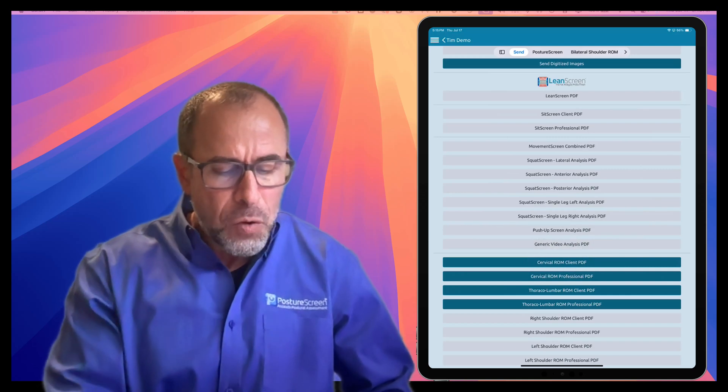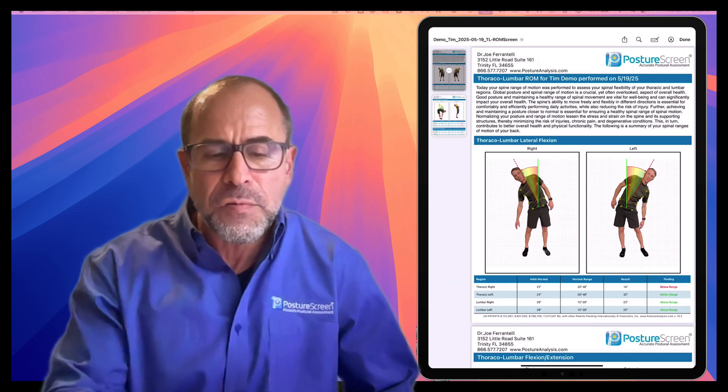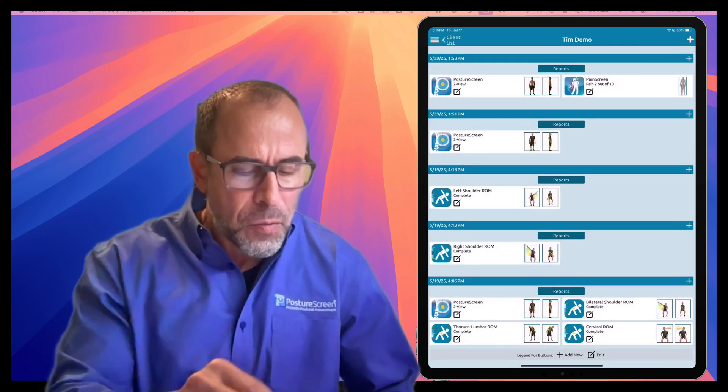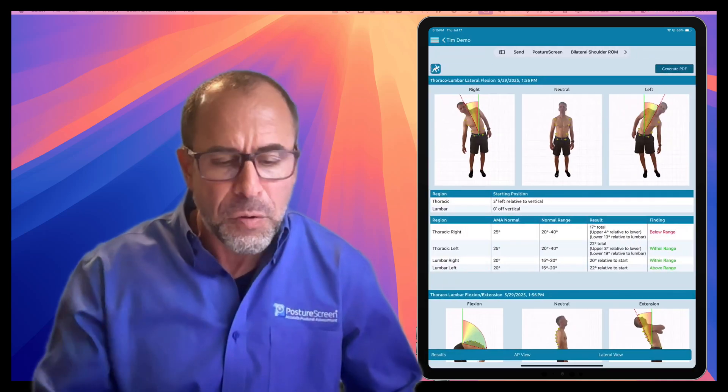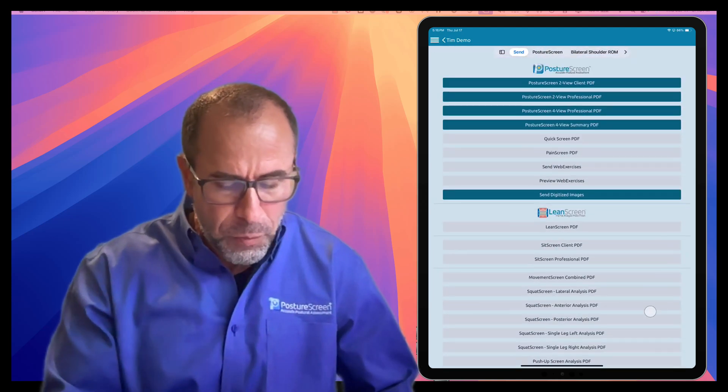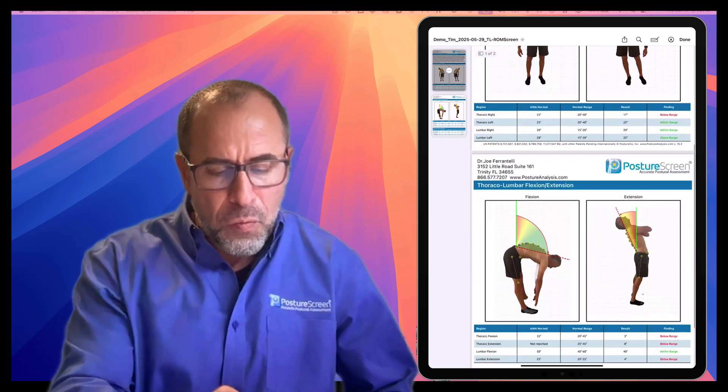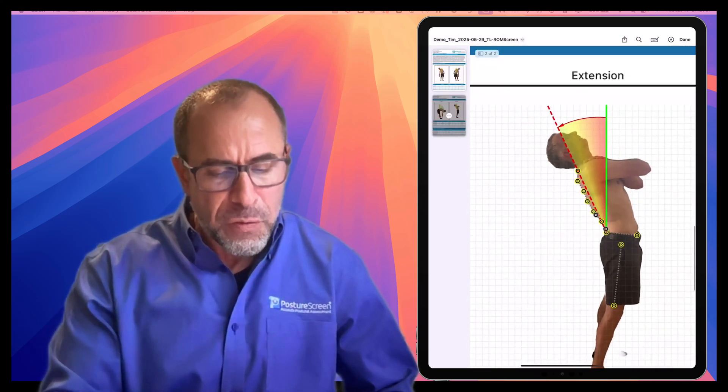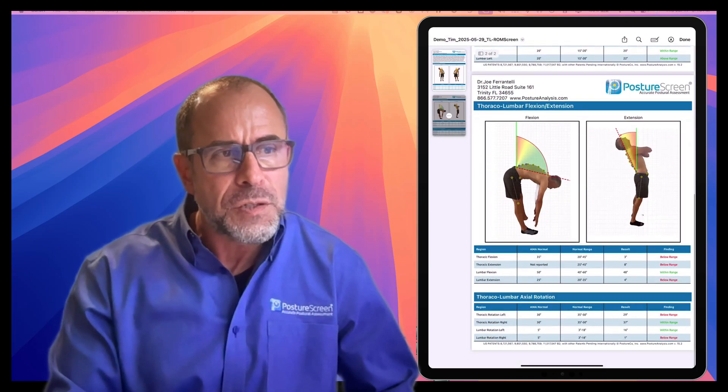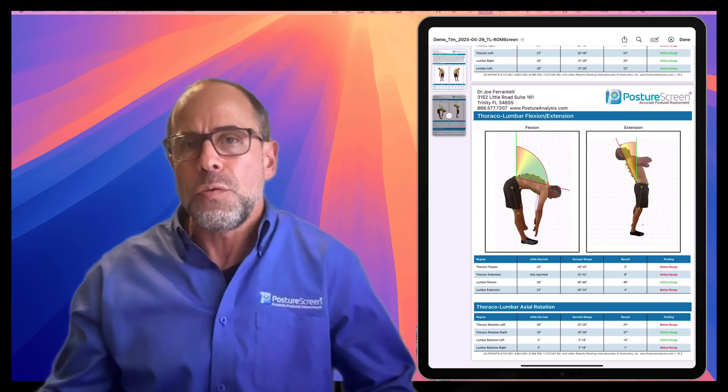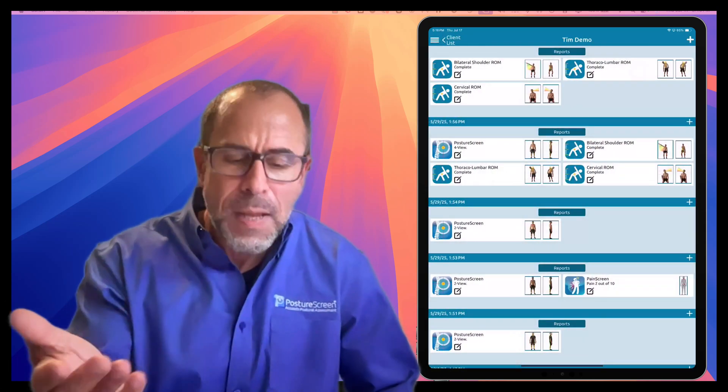Now, what's unique is with the thoracolumbar spine, we're able to track their posture as well. If I generate a report for thoracolumbar spine for the patient, notice what we're able to do is we're literally tracking the curvature of their back from start position to flexion and extension, and then reporting back to normal ranges. How cool is that? And of course we can do follow-up exams and comparisons.